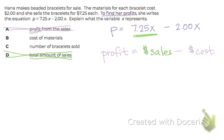This part represents the cost. So $2 times X represents the cost of our materials. Not just X, but $2 times X represents the cost.